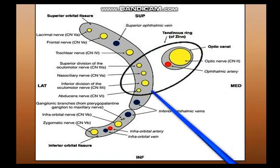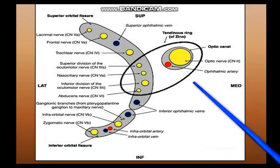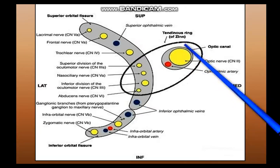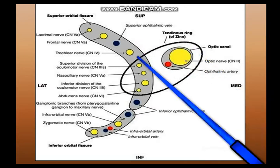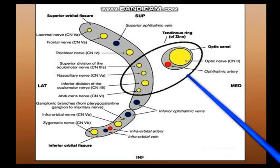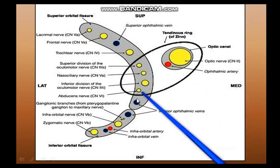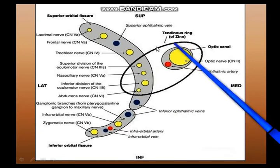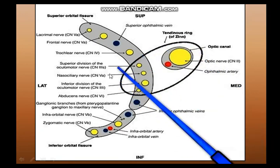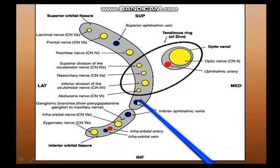The tendinous ring spans across the superior orbital fissure and encircles the optic canal. This fibrous ring has divided the superior orbital fissure into a lateral compartment, an intermediate compartment, and a medial compartment.